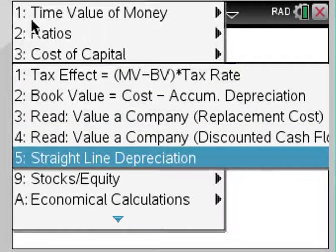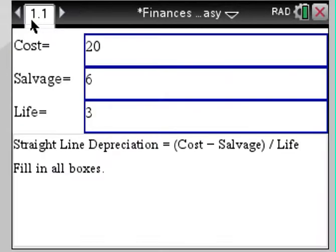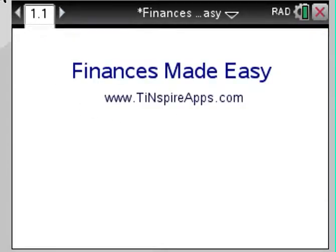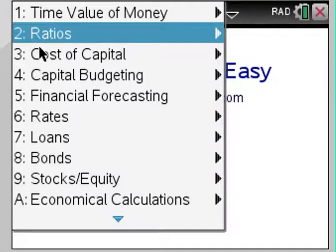That was capital budgeting. For example, let's look at the straight line depreciation method. Let's say we have a cost of $200, salvage value of $50 over a period of three years. Then the straight line depreciation comes up with $46 depreciation.